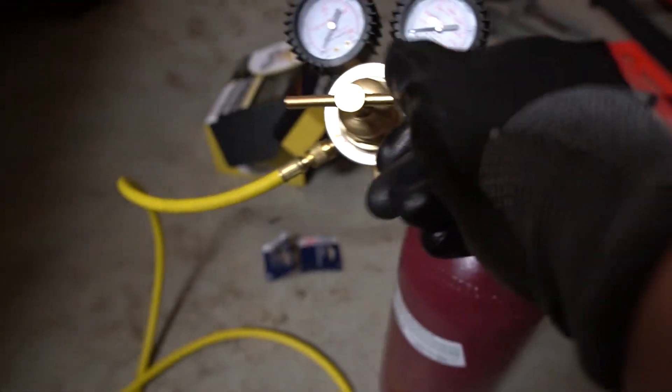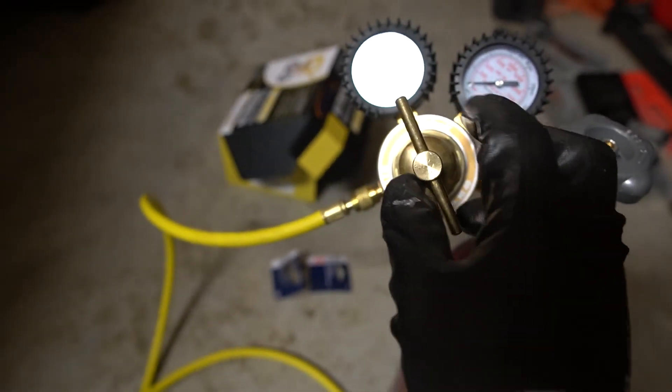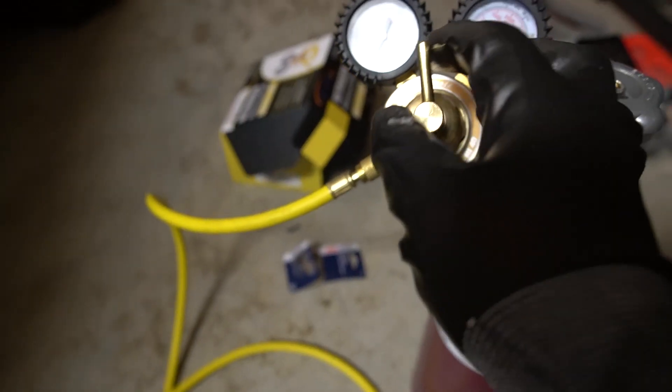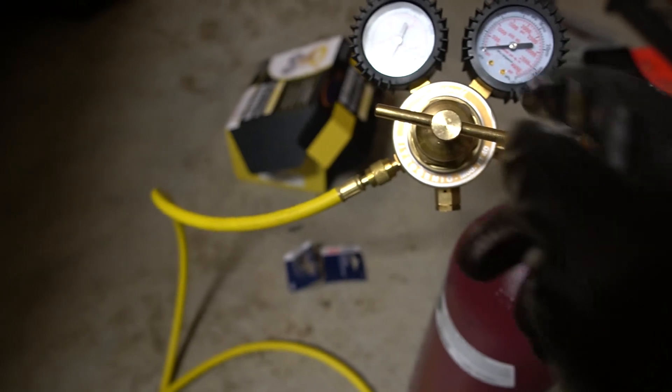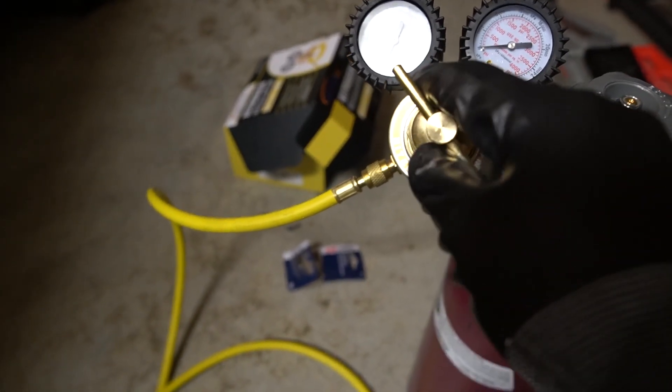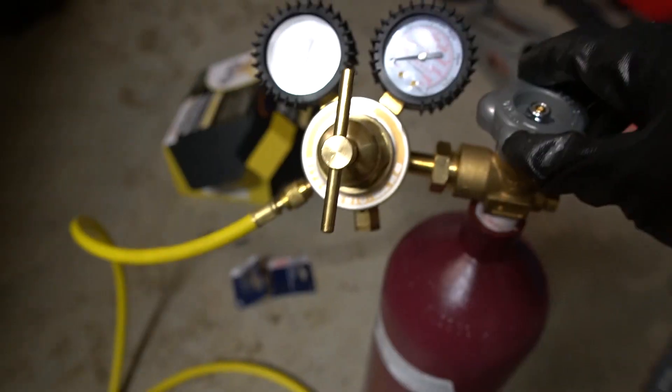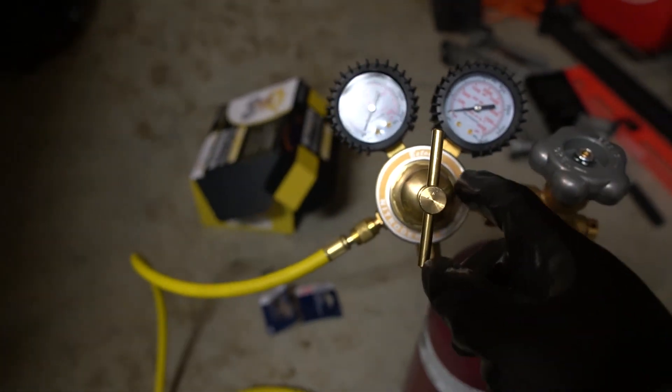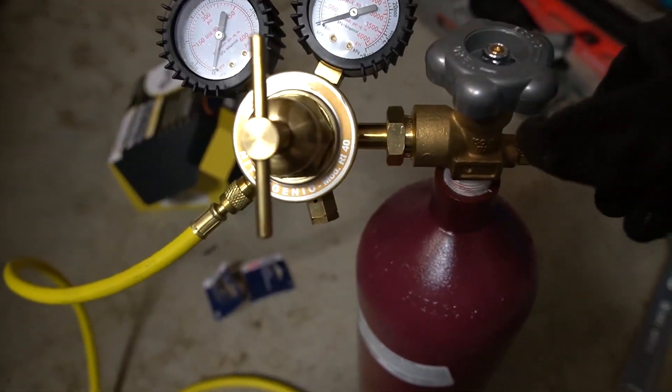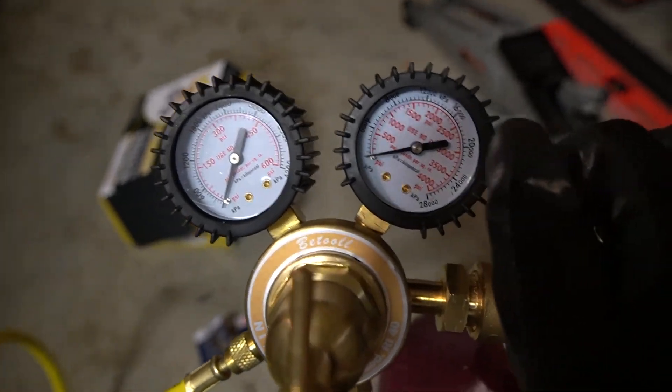Closed means the valve is spun out counterclockwise all the way. And then once you ensure this regulator is closed, you can then open the tank valve.